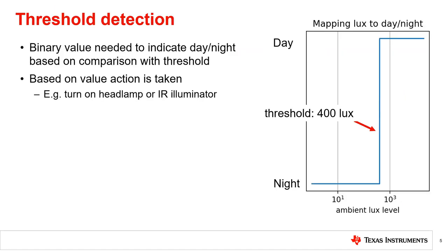Unlike brightness control, where the sensor reading is considered over a range of light intensities, in day versus night detection a threshold light level is set. Above the threshold is considered day, and below the threshold is considered night. Based on this determination, an action is taken, such as turning a headlight or an IR illuminator on or off.